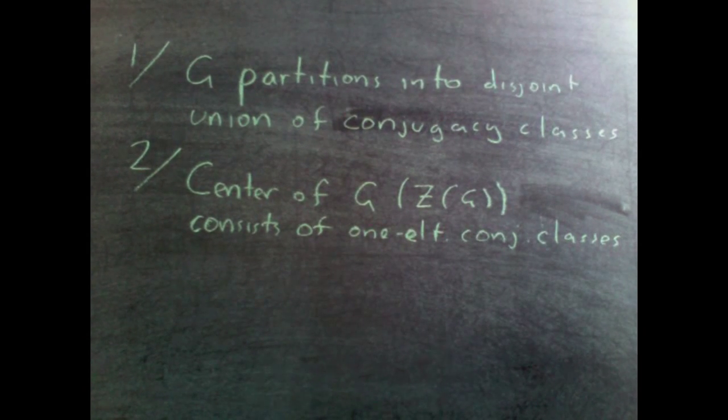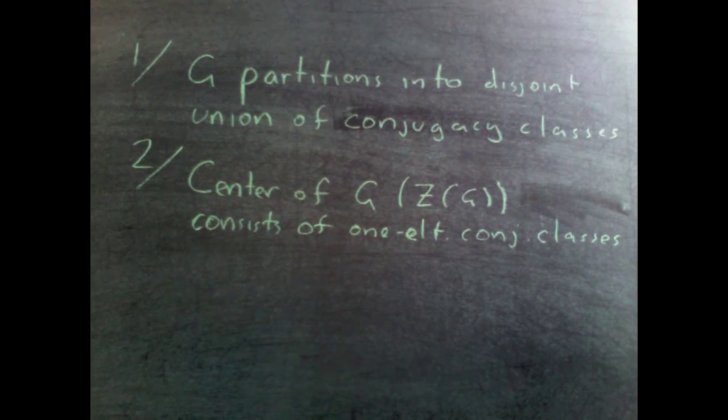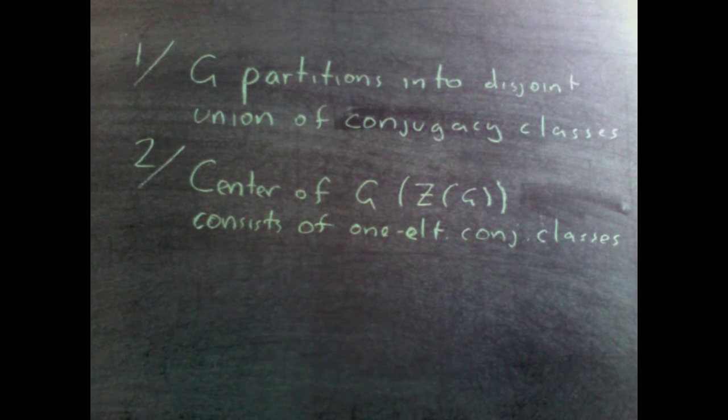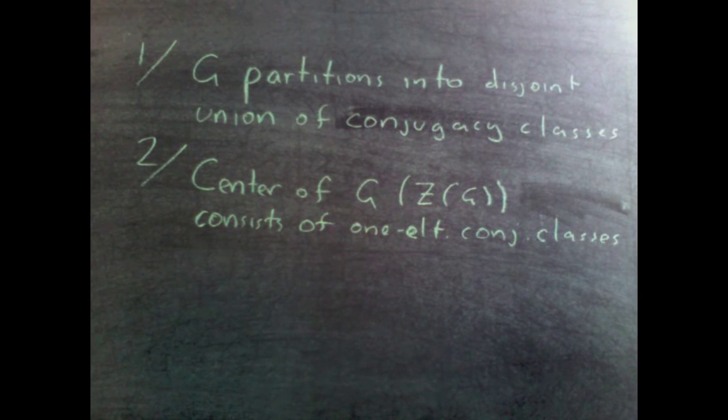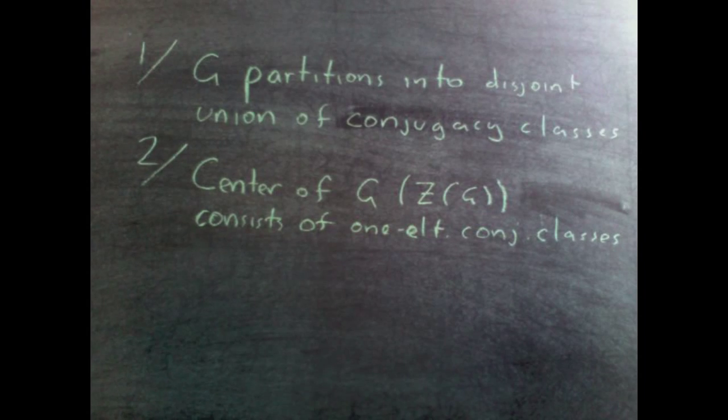So g partitions into a disjoint union of conjugacy classes. This is just because every element of g can be conjugated, so every element of g is in a conjugacy class, and it's clearly disjoint. Then we'll show that the center of g consists of one element conjugacy classes.